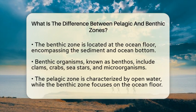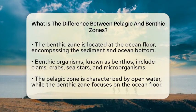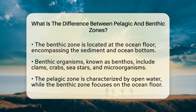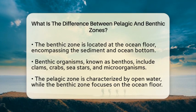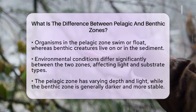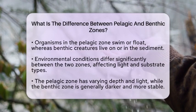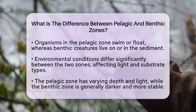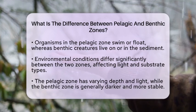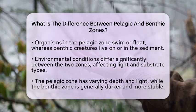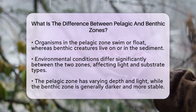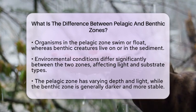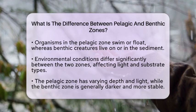One of the main differences between these two zones is their location. The pelagic zone is all about the open water, while the benthic zone is focused on the ocean floor. The types of organisms found in each zone also differ. In the pelagic zone, you will find swimmers and floaters, such as fish and plankton. In contrast, the benthic zone is home to creatures that live on or in the sediment. Environmental conditions play a significant role in shaping these zones. The pelagic zone experiences variations in depth and light availability, while the benthic zone is characterized by different substrate types and generally darker conditions.